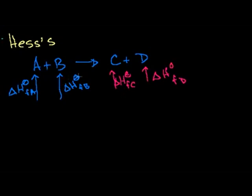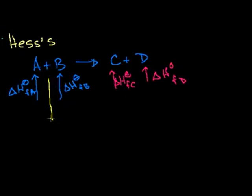Hess's Law tells us that the change in enthalpy is independent of what path we take. So instead of going directly from reactants to products, we could say: let's go back to our constituent elemental form. So if this was like carbon dioxide, you'd be going back to the carbon and the oxygen molecules — back to the elemental form.